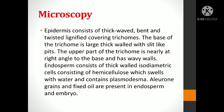Endosperm consists of thick-walled isodiametric cells consisting of hemicellulose, which swells with water and contains plasmodesma. Aleuron grains and fixed oils are present in the endosperm and embryo.